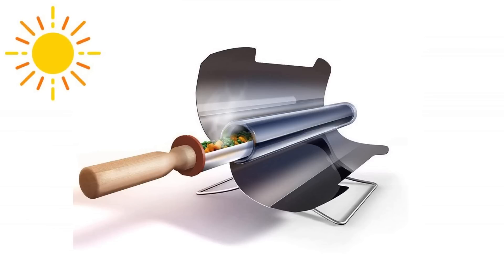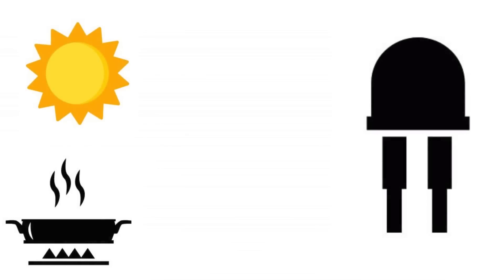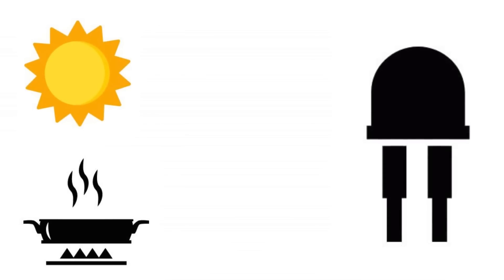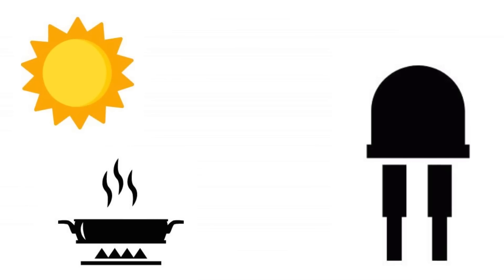These cookers are portable and ideal for camping. An evacuated tube is a great way to trap heat. In a way, it is like a thermal diode which allows heat to flow just one way, and that is inside.